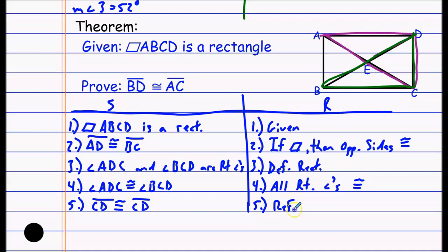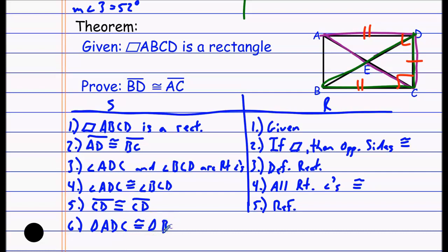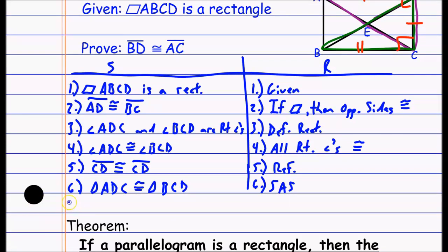DC is congruent to itself by the reflexive property. With two sides congruent and the included angle congruent, I have Side-Angle-Side. So triangle ADC ≅ triangle BCD by SAS. Therefore BD ≅ AC by CPCTC. This establishes the special property of rectangles: the diagonals are congruent to one another.